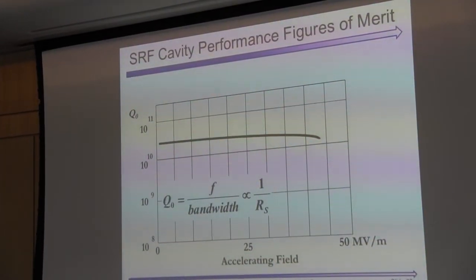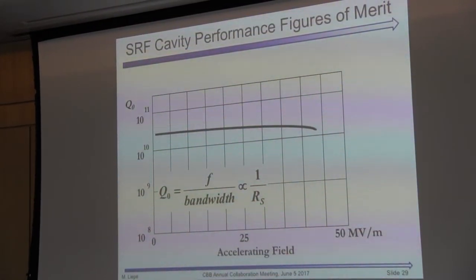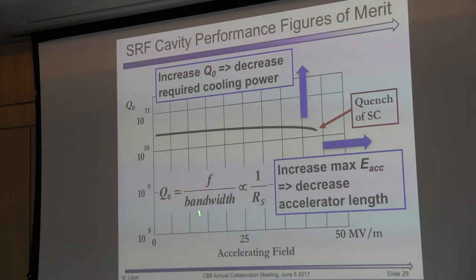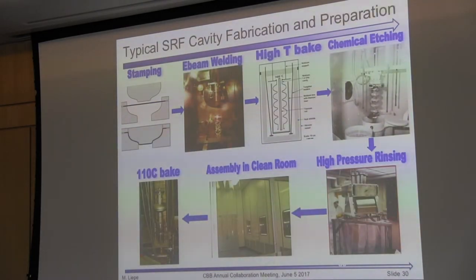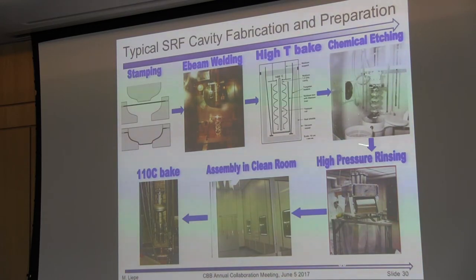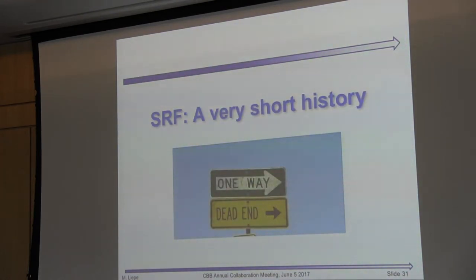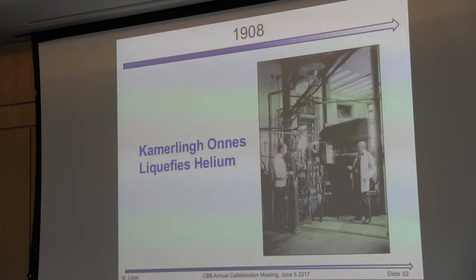We typically show quality factor Q versus accelerating field curves. We like to go high in Q — that decreases the cryogenic cooling power — and high in field, which gives more acceleration per unit length. When we make these cavities it's quite a process: it starts with niobium sheet metal, which we stamp into half-cells, trim, and weld using electron-beam welding. Then there are high-temperature bakes, chemical etching, low-temperature bakes — a whole recipe, part of which is still somewhat empirical. We do assembly in a clean room and then test.